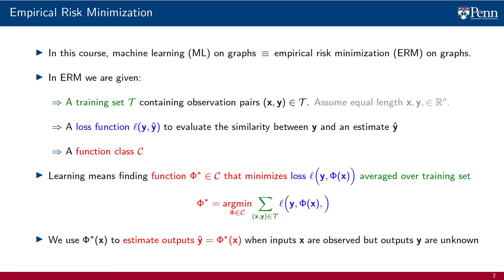Once we find phi star of x, we can use it to estimate outputs ŷ when inputs x are observed but outputs y are unknown. The goal of ML is for these live operation estimates to be good. Producing good estimates in the training set is useful only insofar as it is conducive to producing good estimates during live operation.